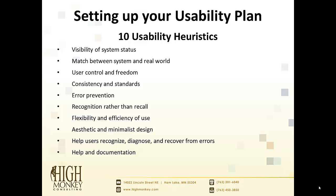Those 10 heuristics include: visibility of system status — do you know where you're at? Match between system and real world — how much does SharePoint match the way you'd actually do things outside of it? User control and freedom — do you have to follow a rigid path or can you move around? Consistency — does the interface stay consistent? Error prevention. Recognition rather than recall — instead of having to remember something, you see a navigational component or page name and recognize it. Flexibility and efficiency of use — do you have to go 47 clicks or is there a clear path? Aesthetics and minimal design. Error recovery. And help and documentation — if I get stuck, is there something to help me out?